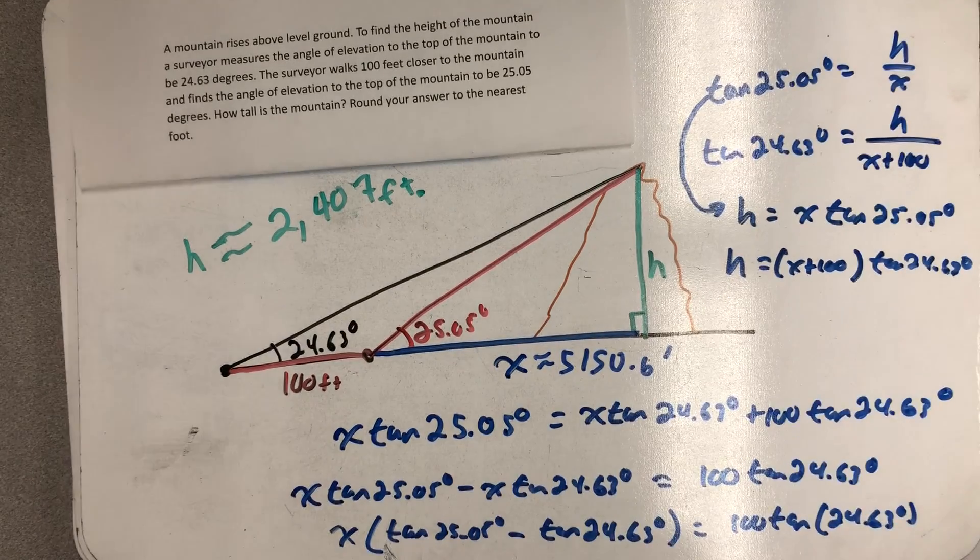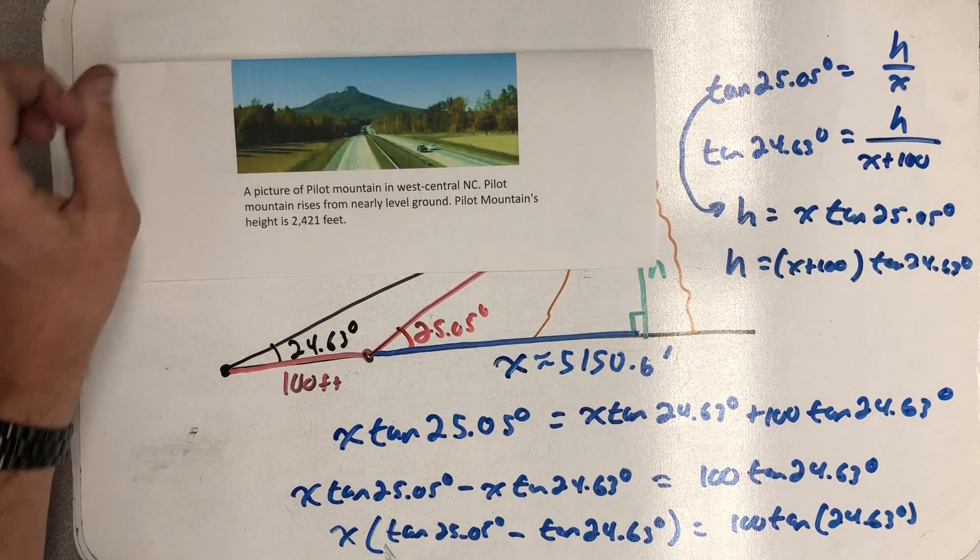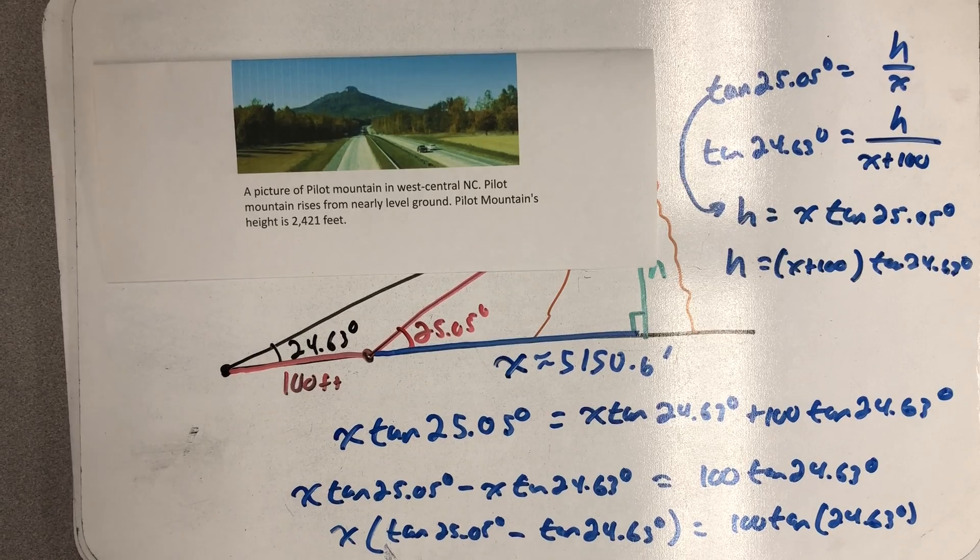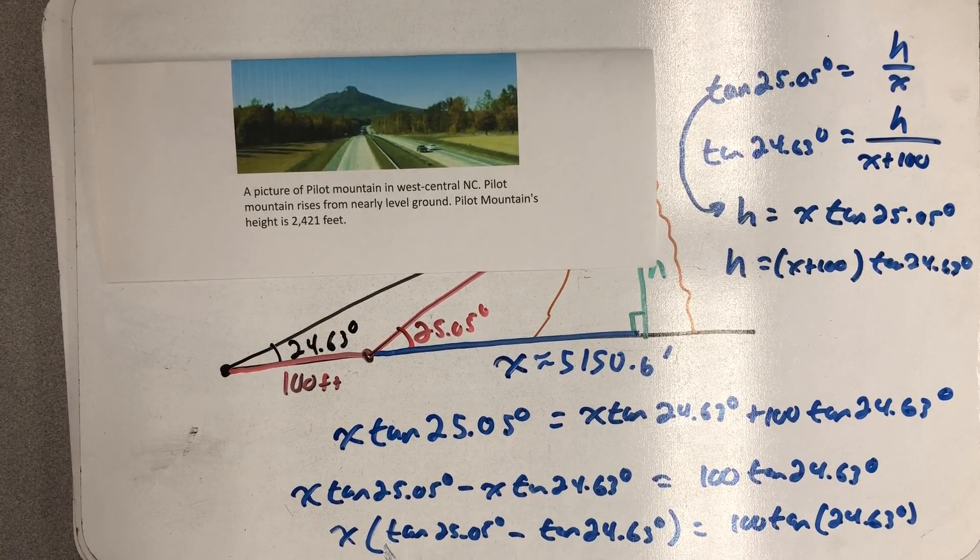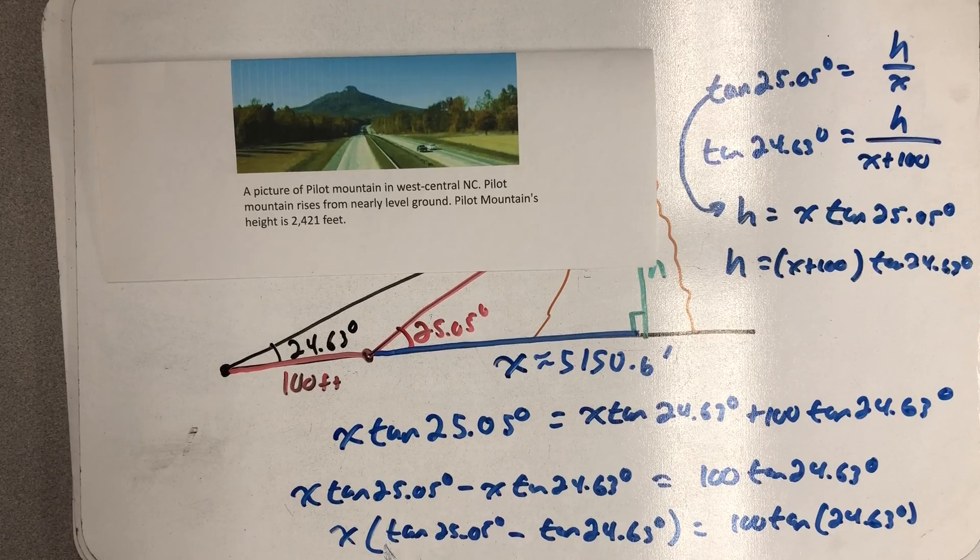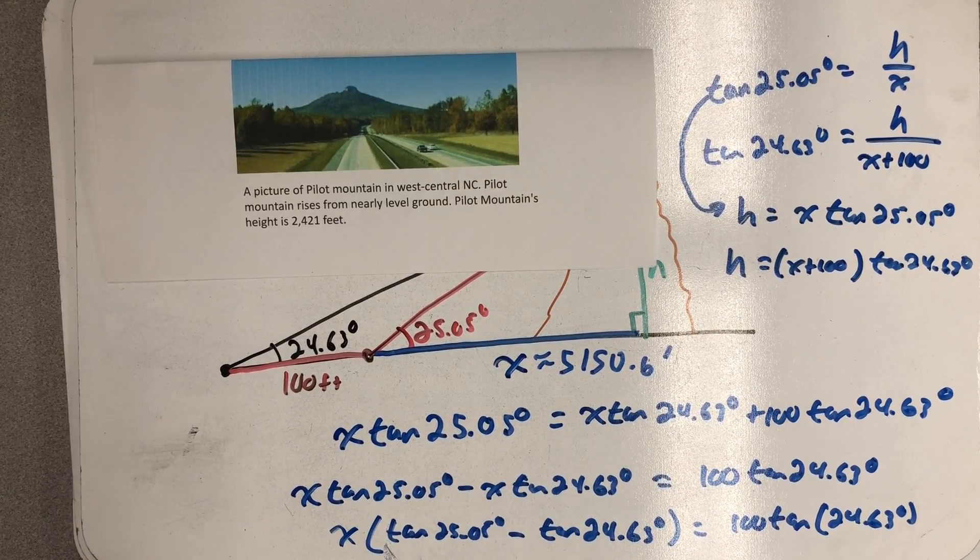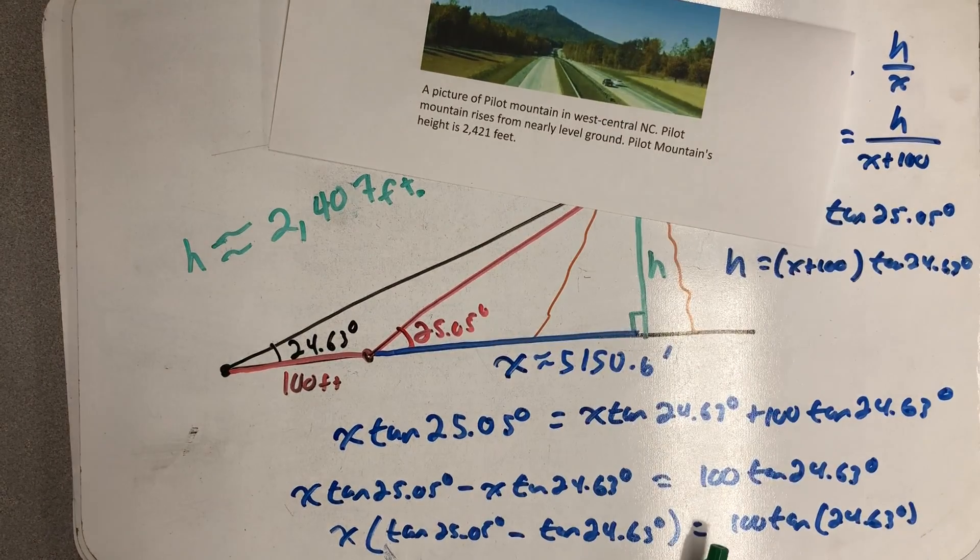So that's the height of the mountain. And it might be rare to have a mountain that rises above level ground, but I'm making this video in North Carolina in the Piedmont Triad area in the foothills just east of where Pilot Mountain sits. And Pilot Mountain actually does rise out of nearly level ground measuring to a height of 2,421 feet, or a mountain just a little bit taller.